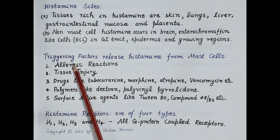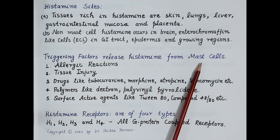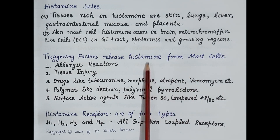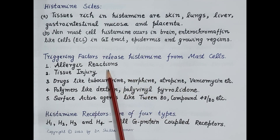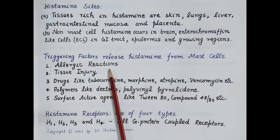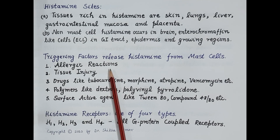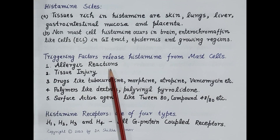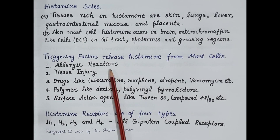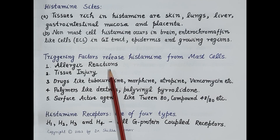The first and most important triggering factor that activates mast cells and causes release of histamine is allergic reactions. Allergens such as smoke, dust, food articles, and chemicals can stimulate B lymphocytes. Once stimulated, B lymphocytes produce antibodies, and the antigen-antibody complex activates mast cells, causing them to release histamine.